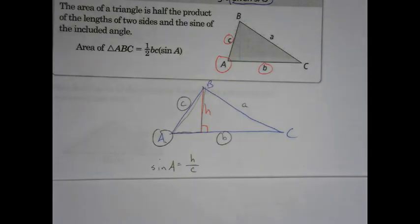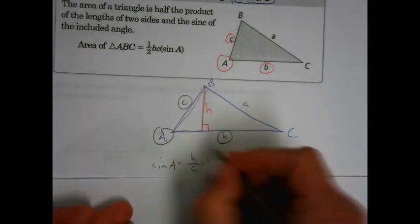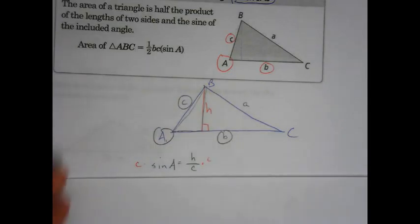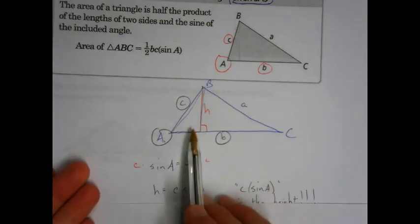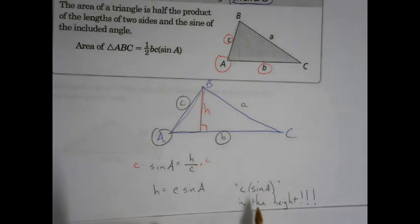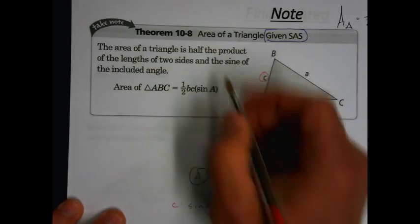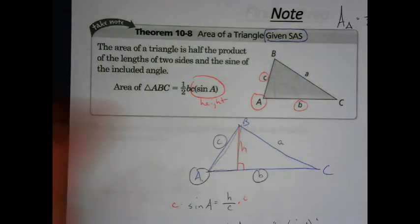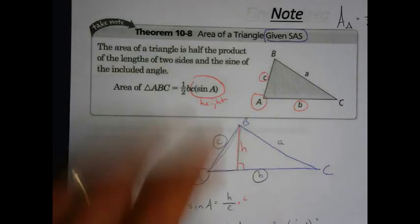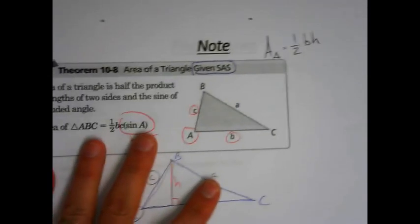So we found the height. The area is one half base times height. If C times the sine of A is the height of the triangle, then this new formula isn't new at all — it's just one half base times height. Ain't nothing new if you know what you're looking at.